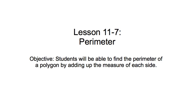This is a lesson on perimeter. Our objective today is for you to be able to find the perimeter of a polygon by adding up the measure of all of the sides. It seems pretty easy, and it is up to a certain point, but you have to do a little problem solving.